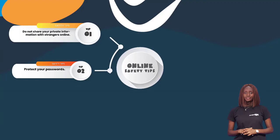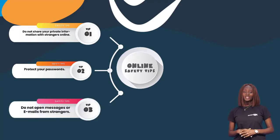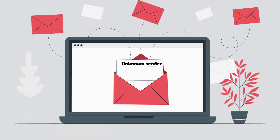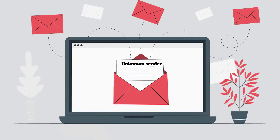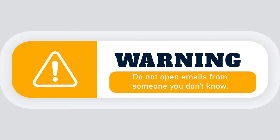Our third tip: do not open messages or emails from strangers. A parent or guardian should be notified in case of unfamiliar or strange looking emails or messages. Hackers and officials are always trying to steal your confidential information. Opening these emails or messages may reveal confidential information to a hacker or even put a virus on your device.